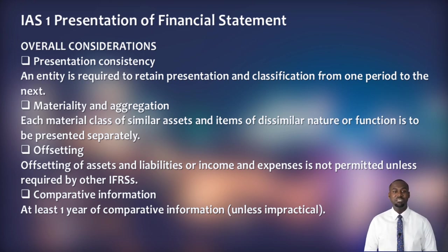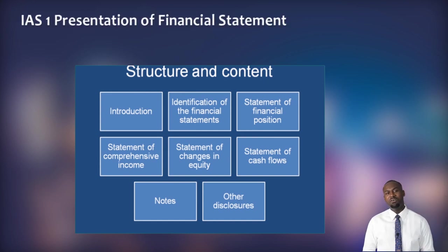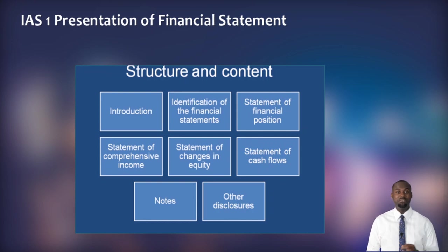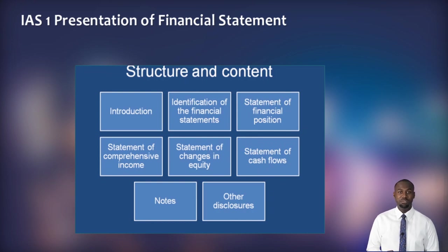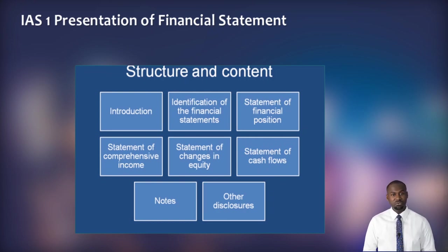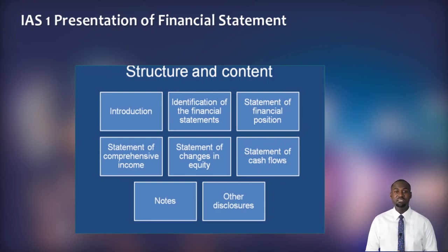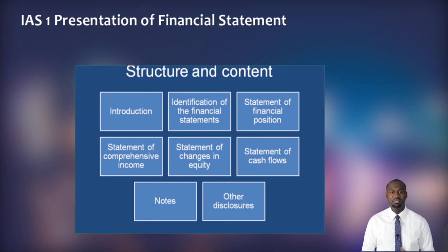Finally, comparative information: at least one year of prior information should be provided in a general purpose financial statement. To conclude, the structure and content of a general purpose financial statement should have an introduction, then identify the particular financial statement being prepared. The hierarchy of financial statements to follow is: number one, the statement of financial position; number two, the statement of profit and loss and other comprehensive income; number three, the statement of changes in equity; number four, the statement of cash flows; then notes and other disclosure requirements.